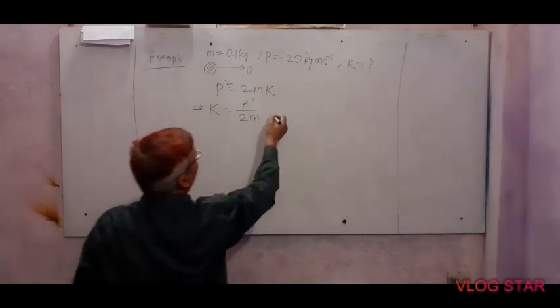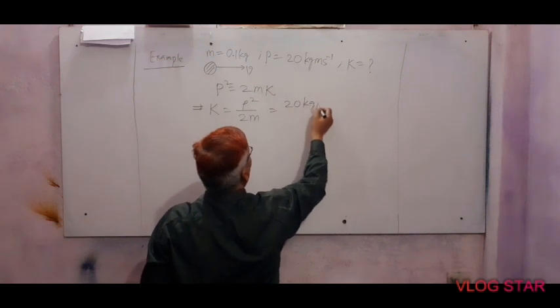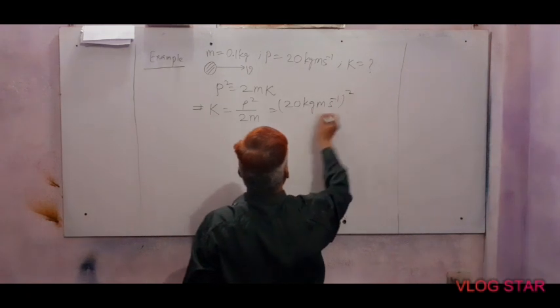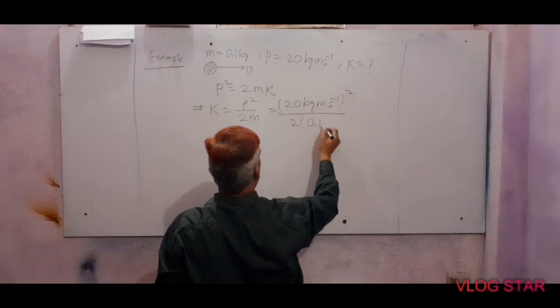Here the value of p is 20 kg meter per second, and the value of mass is 0.1 kg.